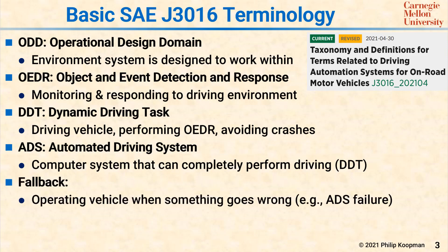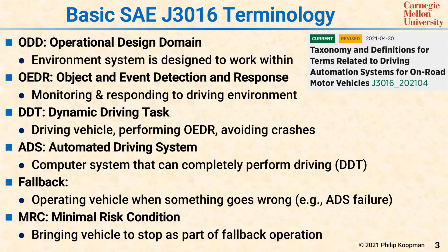Fallback is operating the vehicle when something goes wrong. For example, if the ADS fails or you exit the ODD, there may be a need for a driver to take over operation of the vehicle — that's called a fallback operation. Finally, MRC, Minimal Risk Condition, is the idea of bringing a vehicle eventually to a stop as part of a fallback operation. Summarizing these terms: an automated vehicle operates within an operational design domain, performs OEDR as well as controlling the vehicle — those two things together give you the DDT, which is performed by the ADS. If something goes wrong, a fallback operation is required to bring the vehicle to a minimal risk condition.